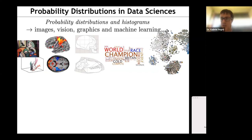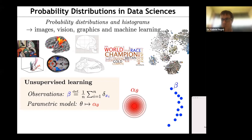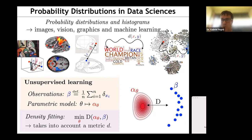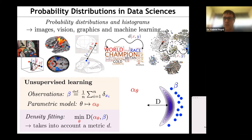Another example, more in computer vision, is modeling a huge collection of images as a density distribution in some abstract space, to do downstream tasks like image recognition or generation. You could say the problem is density fitting or template matching: you have a dataset beta composed of a huge number of points, and you want to capture the geometry of this point set using a template alpha that depends on some parameter theta, then modify theta so that your template becomes as close as possible to the input distribution.